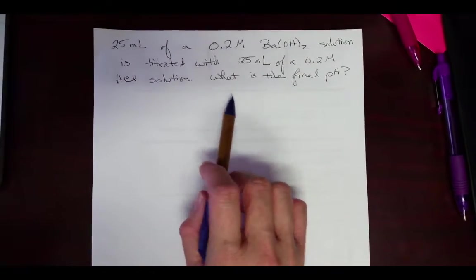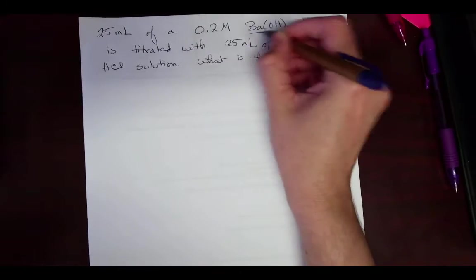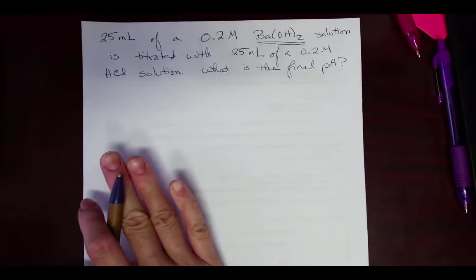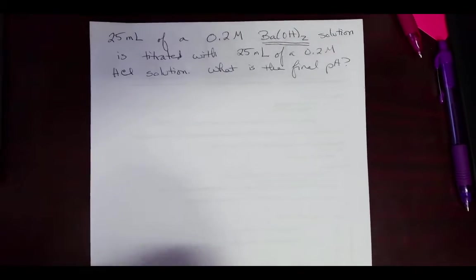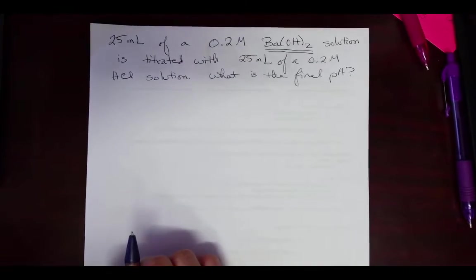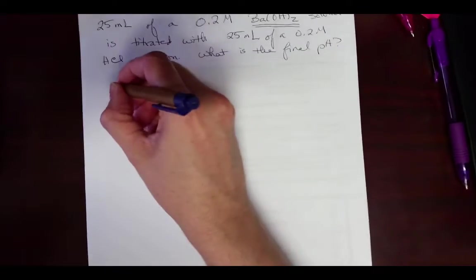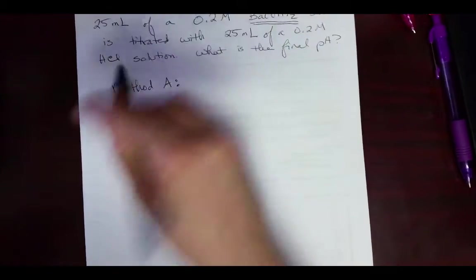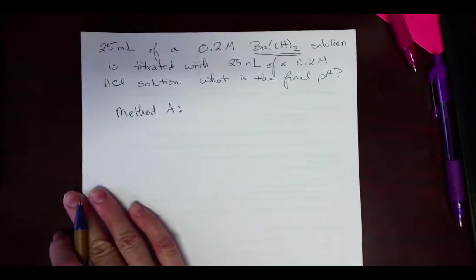And here's the thing, whenever you're doing something that involves something that you've got a base that actually has two hydroxides, there's a couple of different ways to take care of it. So we're going to look at both ways. So you've got method A, and you've got to bear with me for a moment as we're going to do both of these.